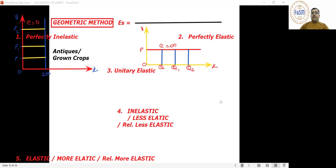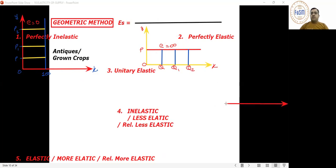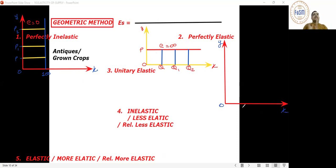Coming to unitary elastic — this is a slightly tricky condition. This is the Y-axis, origin, and X-axis. Now, a supply curve that is generally inelastic will be parallel to which axis? The Y-axis. And if elastic, parallel to the X-axis.